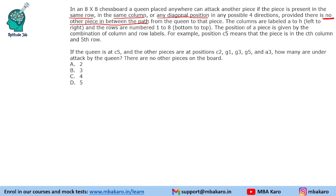The columns are labeled A to H from left to right and the rows are numbered 1 to 8 from bottom to top. The position of a piece is given by the combination of column and row labels. For example, C5 means C is the column and the 5th row.